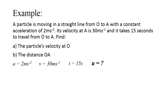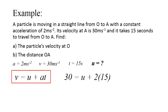From all this information, you can use the formula v equals to u plus at to find the value of u. Substitute all the values: 30 equals to u plus 2 times 15, and you can get u equals to 0 metres per second. Every time you need to do this type of calculation, make sure you list out all the information you have and then choose the best formula to calculate the answer you need.